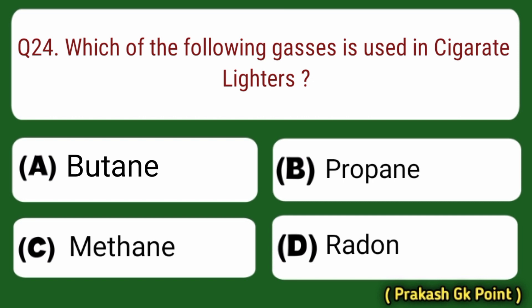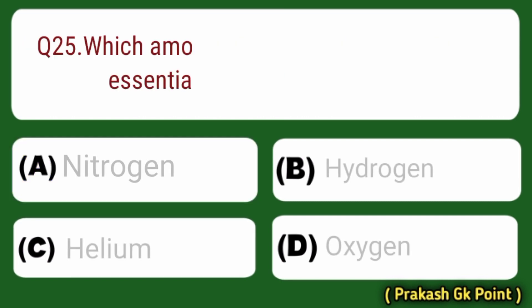Next question: which one of the following gases is used in cigarette lighters? Answer: Option A — Butane.